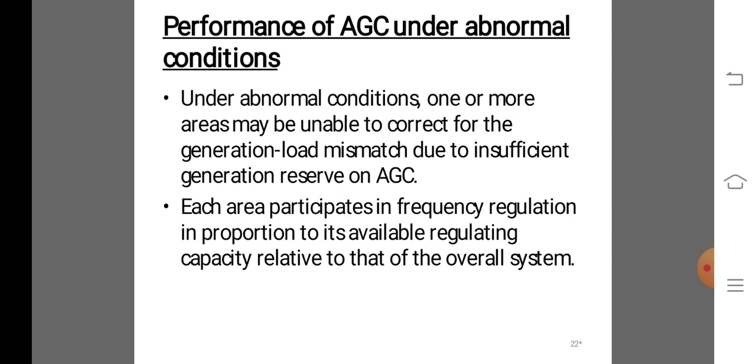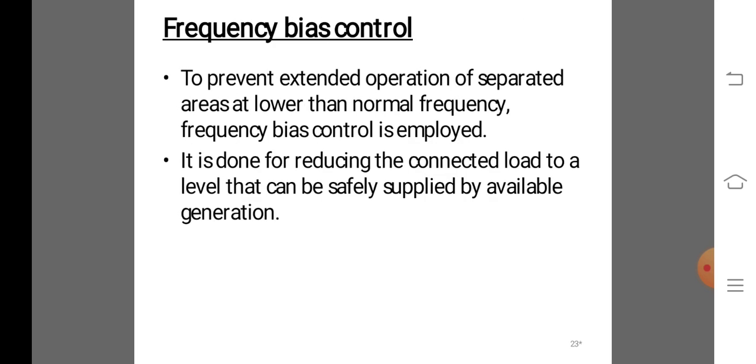Consider two generating stations connected by a tie line. For a load increment on station B, the kinetic energy of the generator reduces to absorb the same. Then, generation increases in both stations A and B. The frequency will be less than normal at the end of the governor response period. The load increment will be supplied partially by A and partially by B. The tie-line power flow will change thereby.